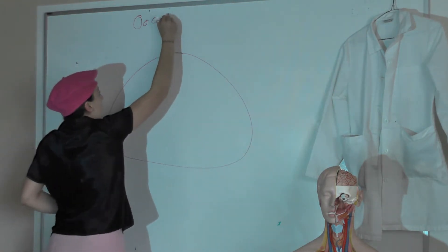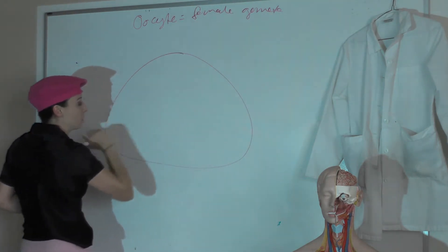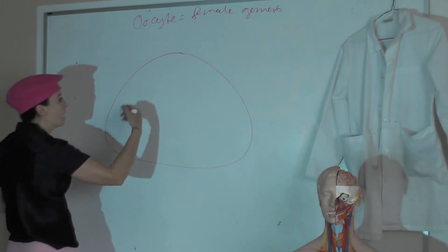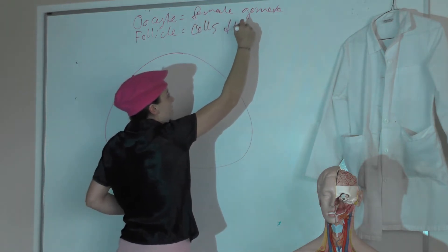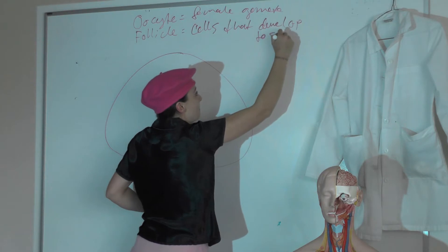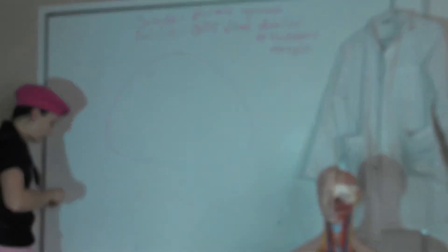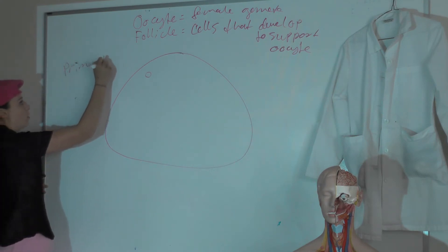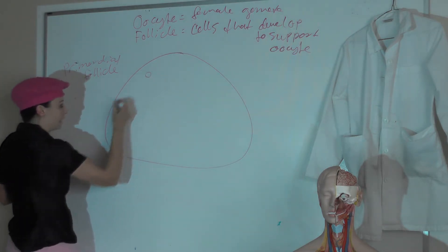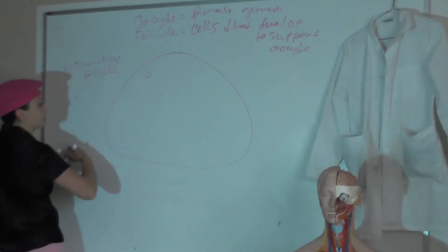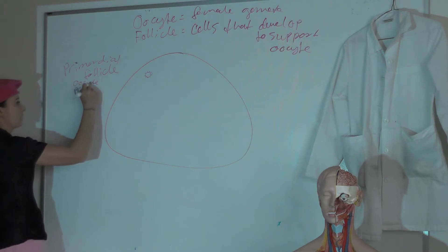The oocyte is the female gamete. The outer part of an ovary is the germinal outer cortex, and then it has an inner medulla. Our oocytes are here, surrounded by follicles — cells that develop to support the oocyte. Our first type of follicle is called the primordial follicle, which has our oocyte and just one little layer of pre-granulosa cells.